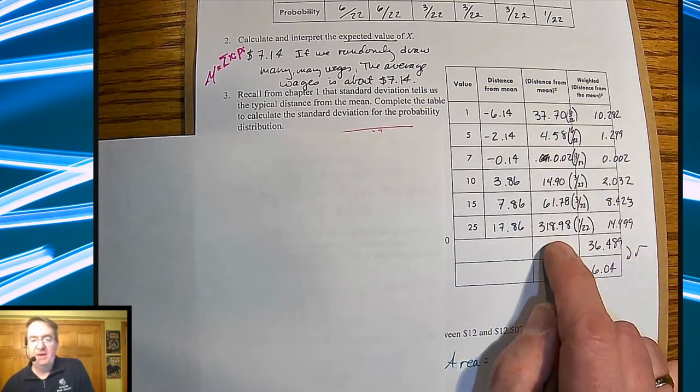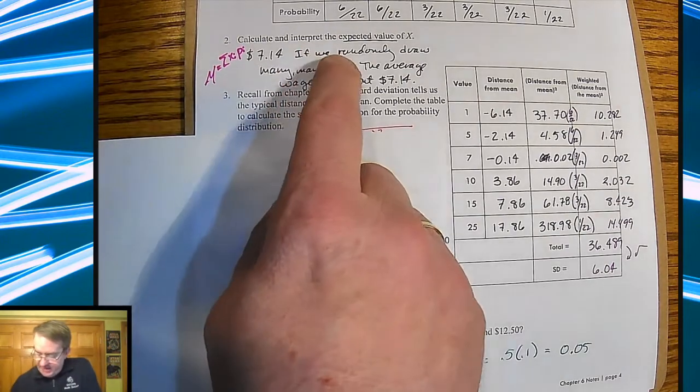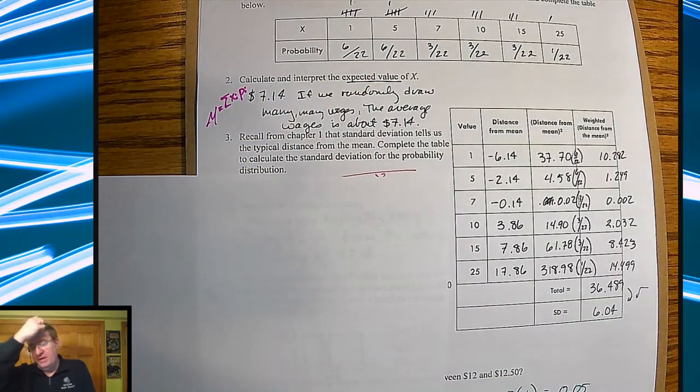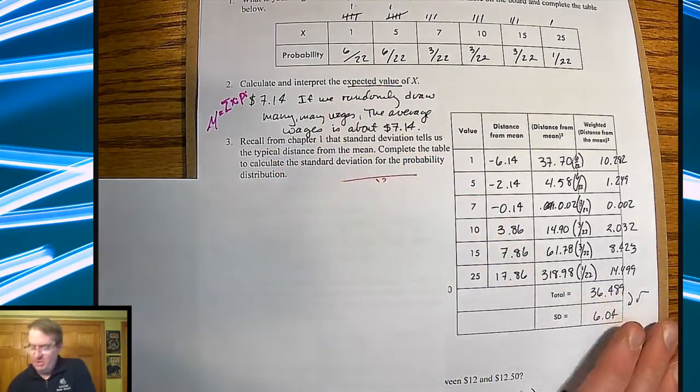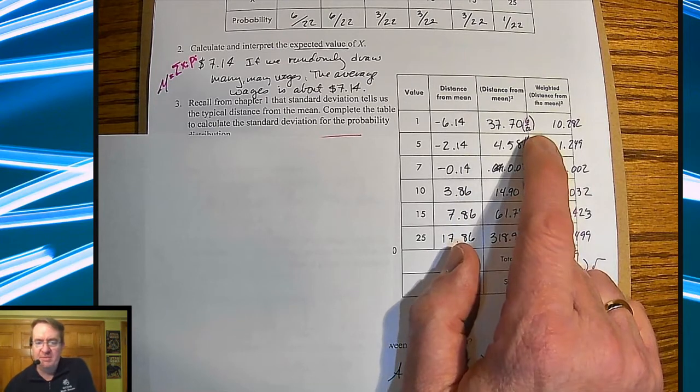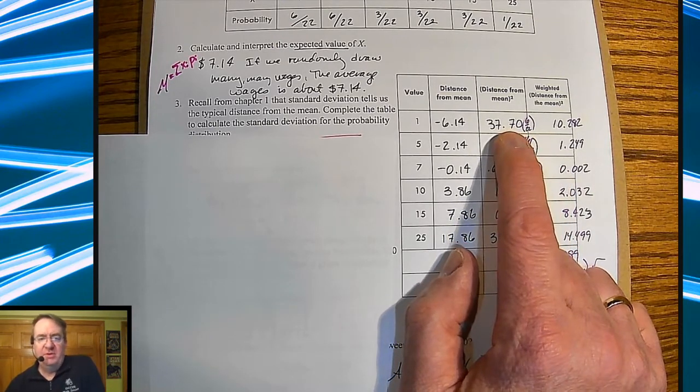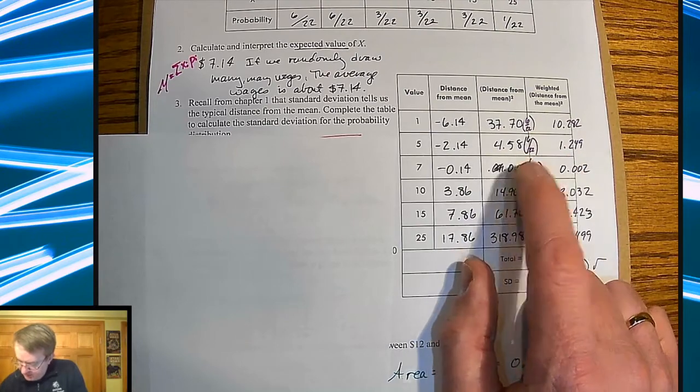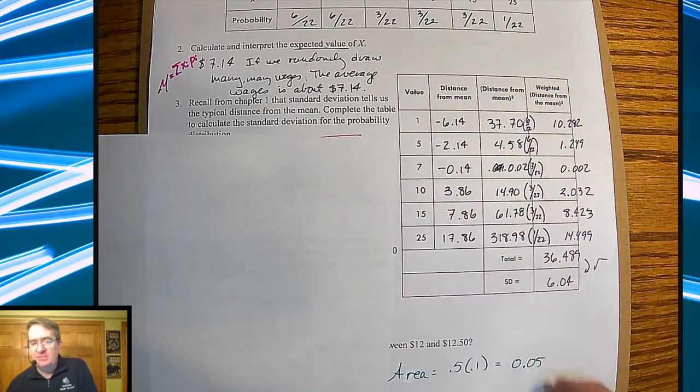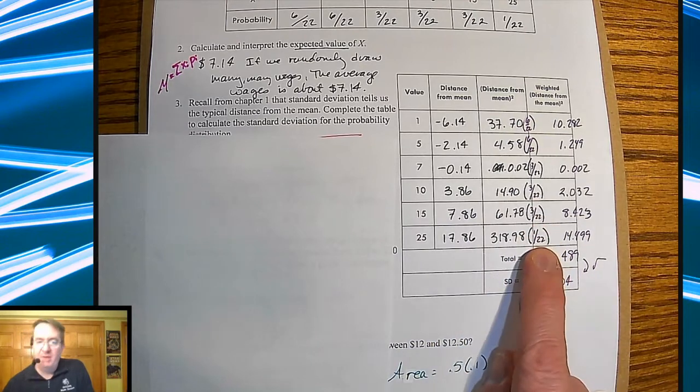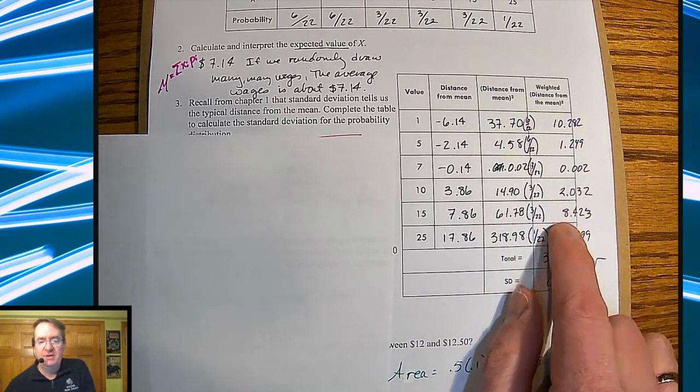Now the difference is much like with the expected value from yesterday, where we had to weight each of these values by the probability. And remember, it kind of works out because the 6 is telling you how many times the item happens, and the 22 is doing the division for you. We need to do the same thing over here. So we're taking this, and this is going to be weighted the most because it happens the most, actually that and the 5. And so I'm going to take 37.7, multiply by 6 over 22, and I get a value of 10.282. Do the same thing across here. So it's the same, this is almost the exact same setup as what we did for the standard deviation project. The only difference that we're doing here is that we're multiplying through by the probabilities so we can scale the influence of each of these numbers.